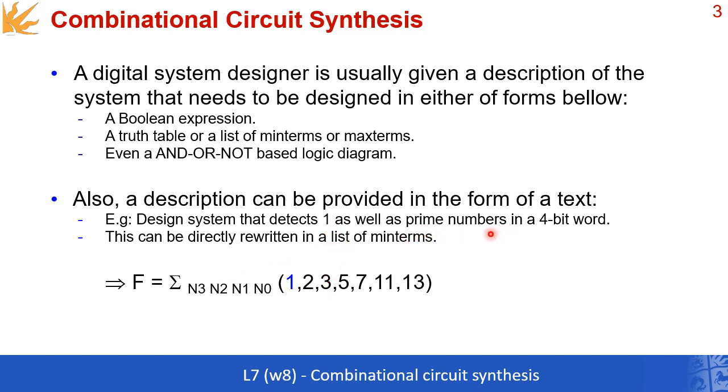What you want is this function to output 1 for input which is equal to 1, equal to any other prime number. As you know, the prime numbers are those numbers that are divisible only with themselves and 1. So that coincides with the minterms for the prime numbers. So the minterm for input equal to 1 is minterm 1, which is the second minterm in the truth table. Then for prime number 2, it's minterm 2, 3, 5, and so forth.